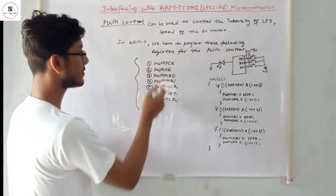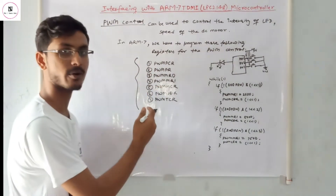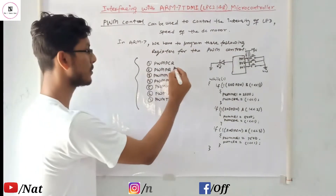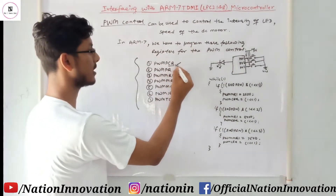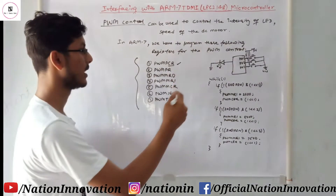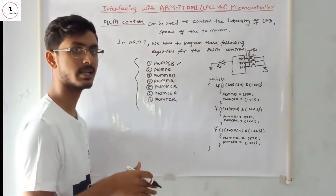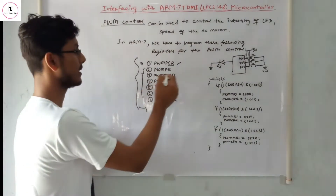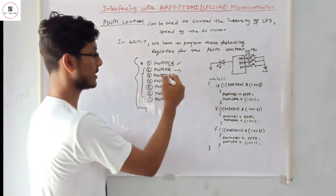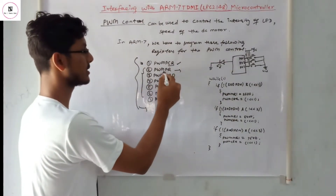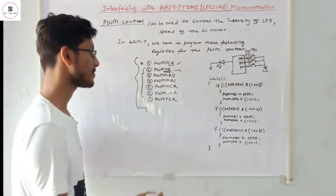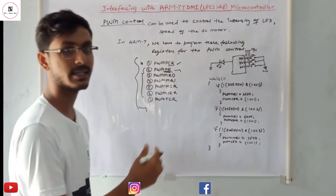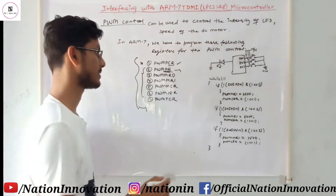The following registers need to be programmed for pulse width control. The first register is PWM-PCR, which is the programmable control register. First it is reset, then we set the required value. The PWM-PR register is the pre-scaling register, used for the pre-scaling function. The PWM-MR0 register is for setting the highest width of the pulse.